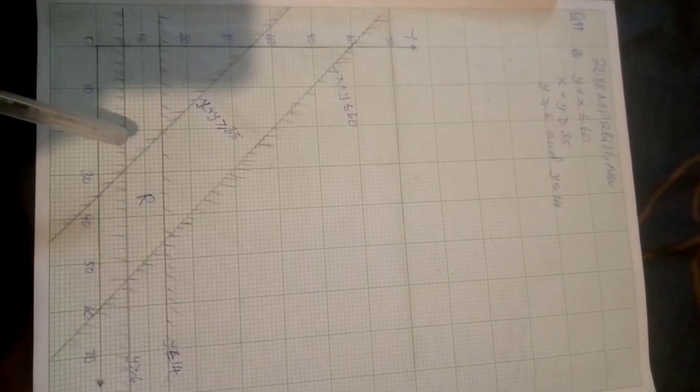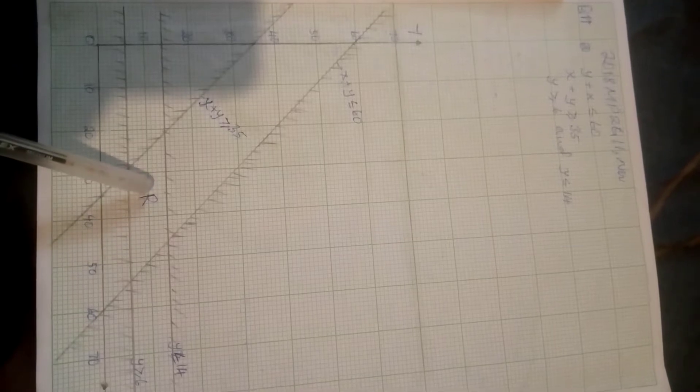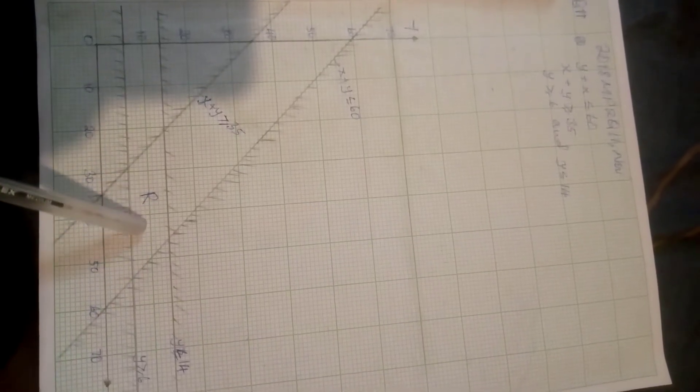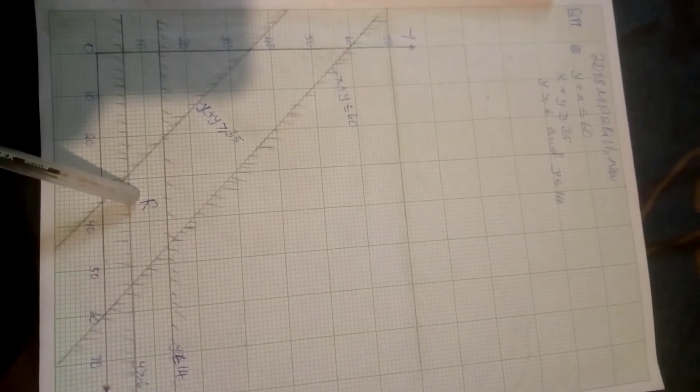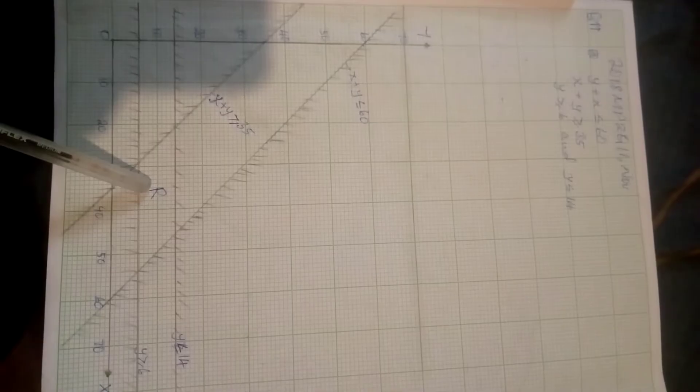And to be specific, this is the region that we are required to show with these four inequalities. This is the region, region R. I've labeled it R there. Thank you so much, and let's go to the next question.